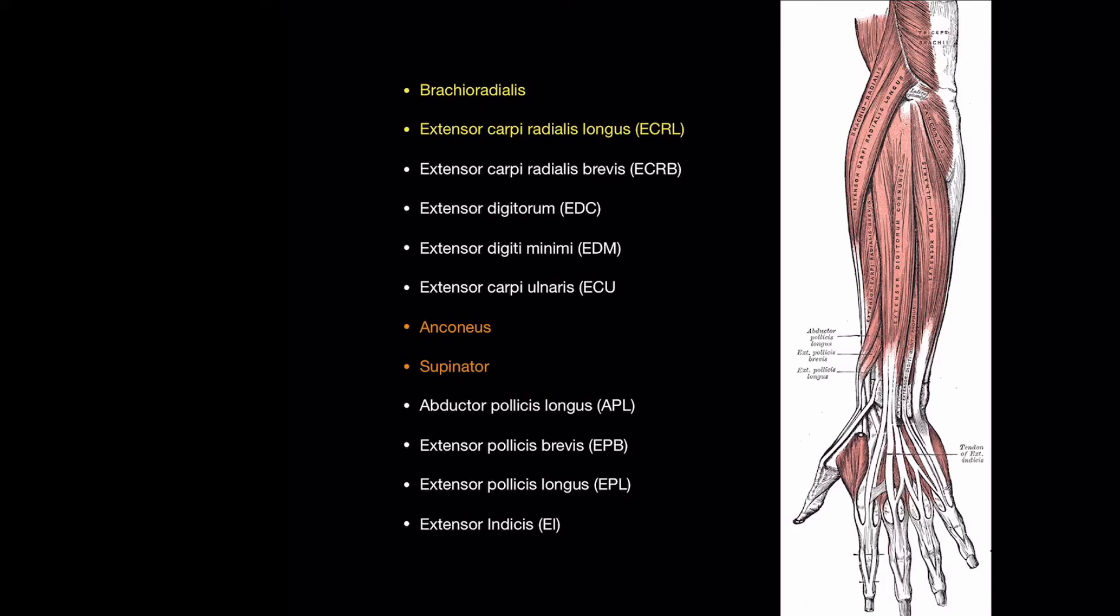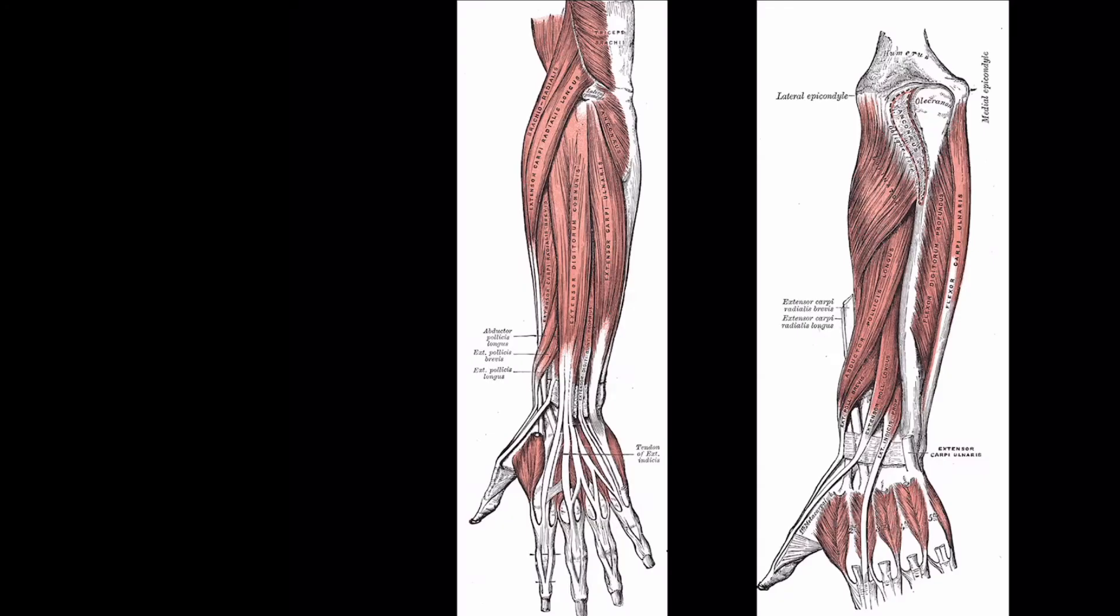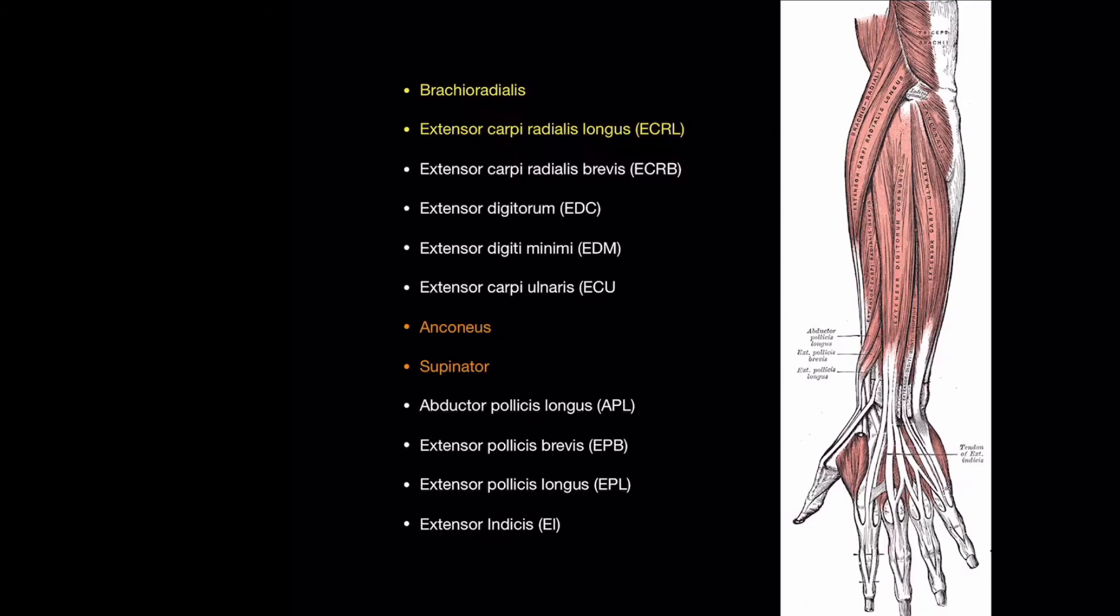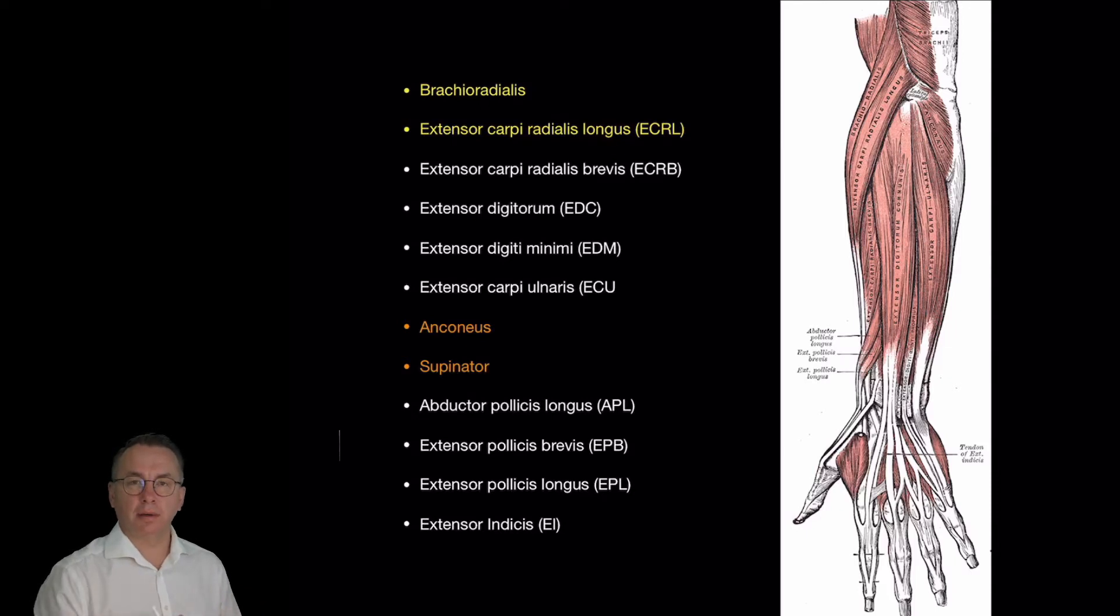The anconius and the supinator. The anconius is a small muscle arising from the lateral epicondyle which exerts a small amount of extension and abduction. The supinator as its name implies supinates or fixes the forearm in supination. The anconius and supinator arise here around the lateral epicondyle. So far we have brachioradialis, anconius and supinator. These are the non-extensors of the forearm compartment.